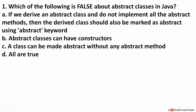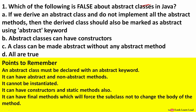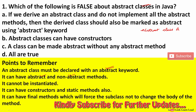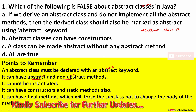The first question is about abstract classes and we have to identify which of the following statements are false. An abstract class is a class that must be declared with the abstract keyword — for example, 'abstract class A'. An abstract class can have abstract as well as non-abstract methods — two types of methods.